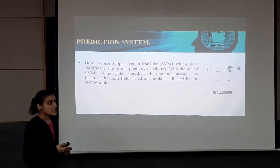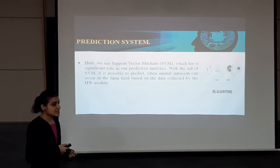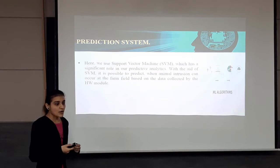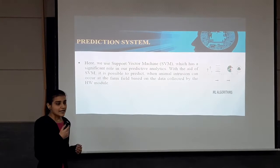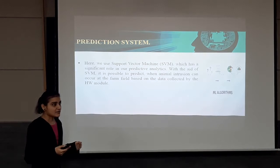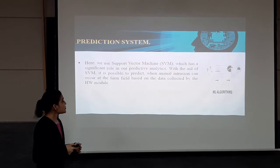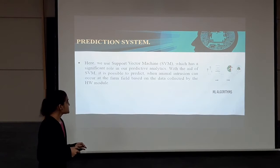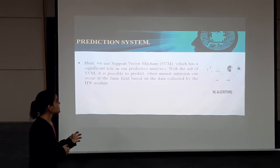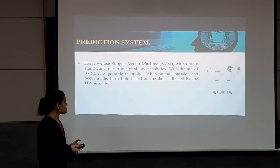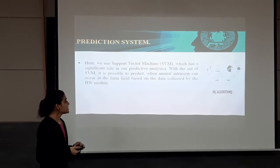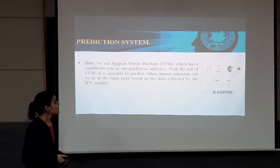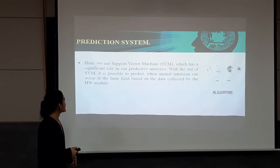The prediction system is the most important part of this research, because by using it, the user or farmers will know at what time, and in which conditions, the animal's intrusion can occur in the farm field — especially under what climate conditions. We are using the Support Vector Machine, which has a significant role in our predictive analysis. With the aid of SVM, it is possible to predict that animal intrusion can occur at the farm field based on the data collected by the hardware.